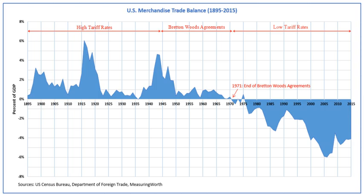Never before had international monetary cooperation been attempted on a permanent institutional basis. Even more groundbreaking was the decision to allocate voting rights among governments not on a one-state one-vote basis, but rather in proportion to quotas. Since the United States was contributing the most, U.S. leadership was the key. Under the system of weighted voting, the United States exerted a preponderant influence on the IMF. The United States held one-third of all IMF quotas at the outset, enough on its own to veto all changes to the IMF charter. In addition, the IMF was based in Washington, D.C., and staffed mainly by U.S. economists. When the IMF began operations in 1946, President Harry S. Truman named White as its first U.S. executive director. White served occasionally as acting managing director and generally played a highly influential role during the IMF's first year.